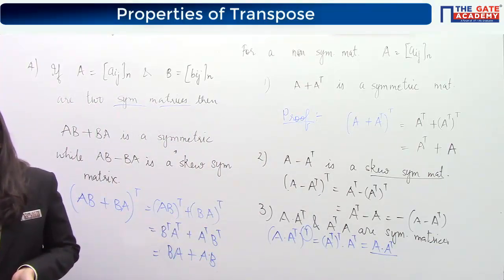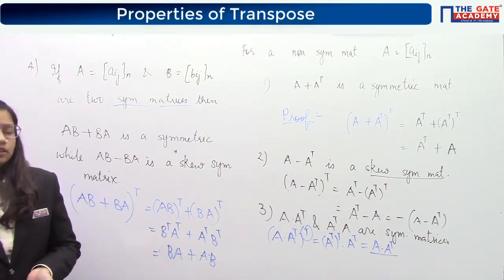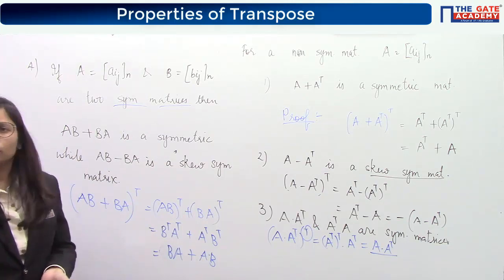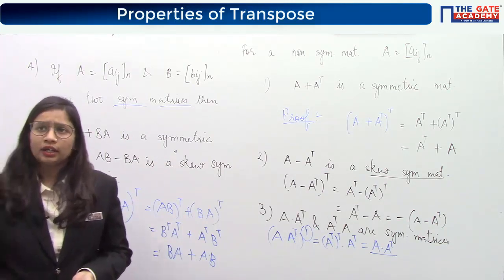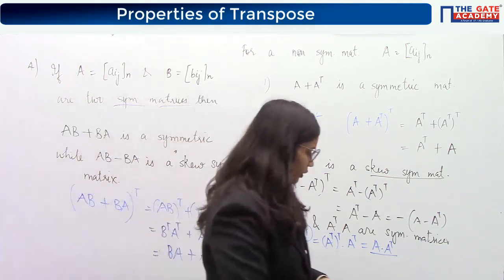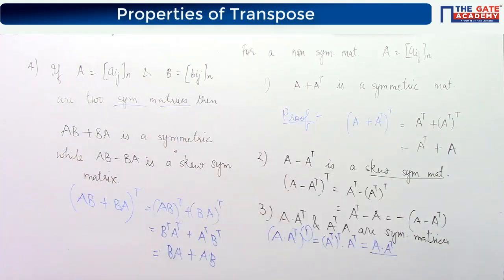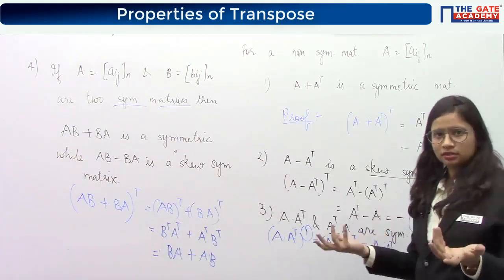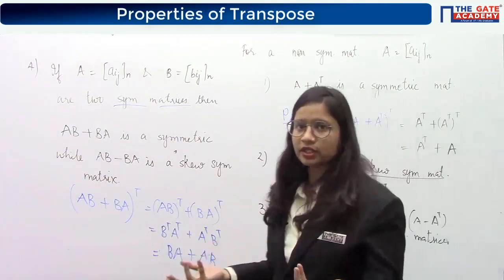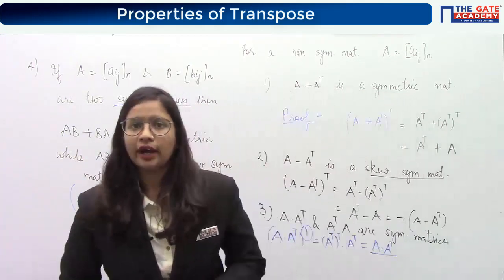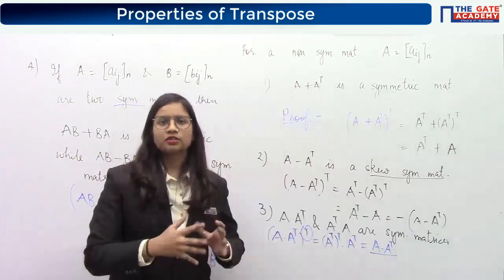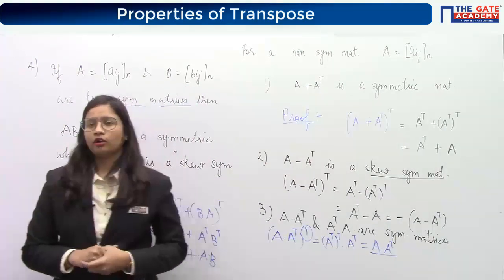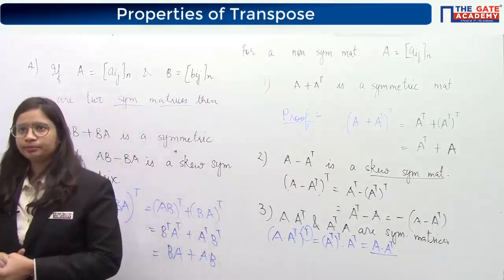Note that A into A transpose is not always equal to A transpose into A, because AB is not always equal to BA in matrix multiplication. These are just both symmetric matrices individually, but they are not necessarily equal to each other.